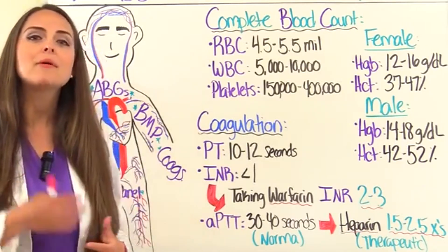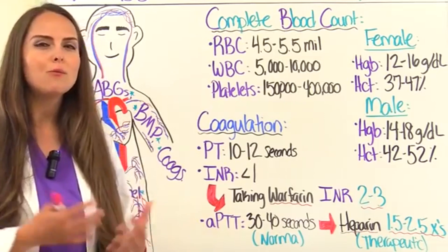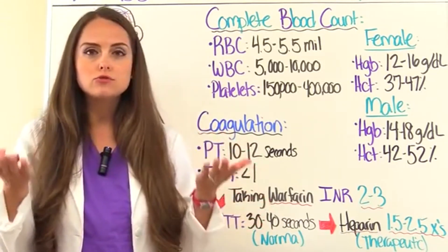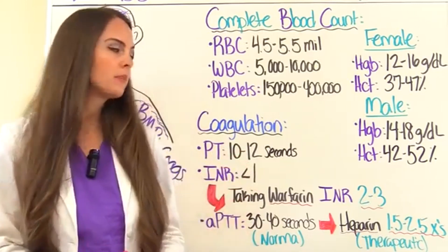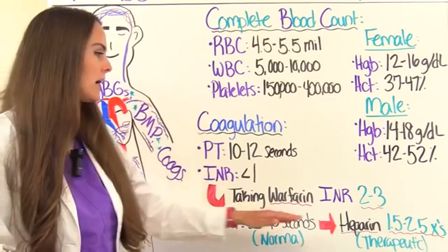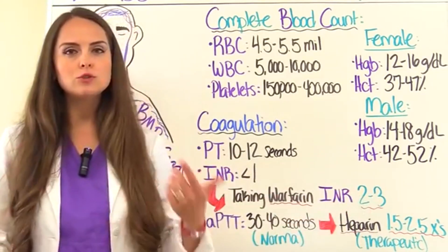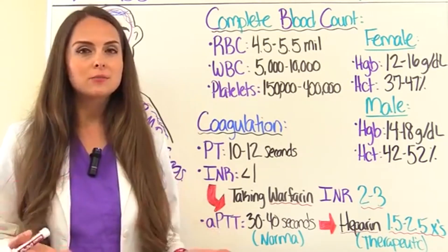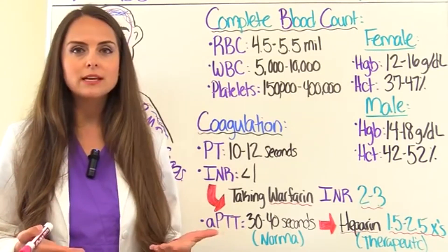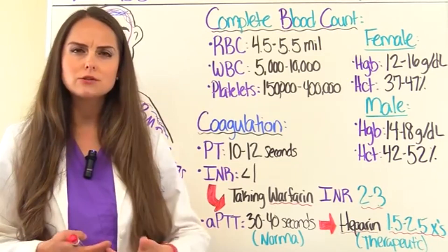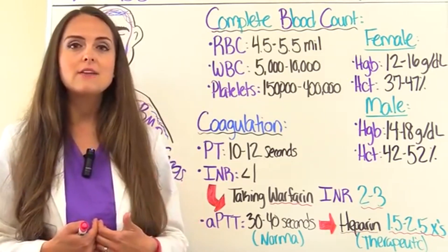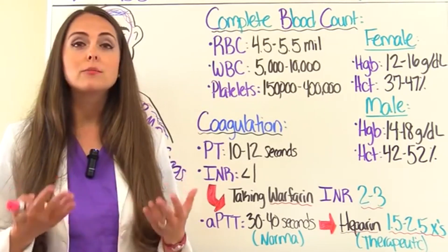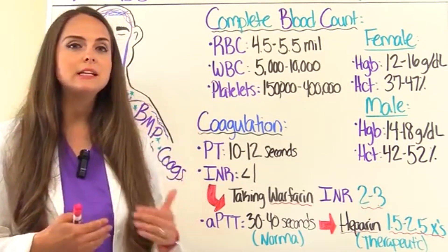If a patient is taking warfarin, we want their INR to be between 2 to 3 to be therapeutic — so the drug is working to prevent blood clots. If it's less than 2, the warfarin is not achieving what we need, so the dose would need to be increased. If it's way greater than 3, they are at risk for bleeding, so the dose would need to be decreased.